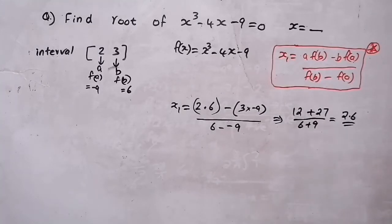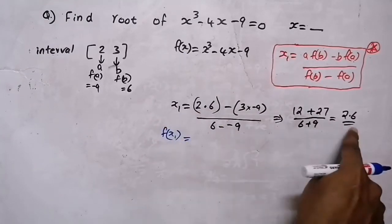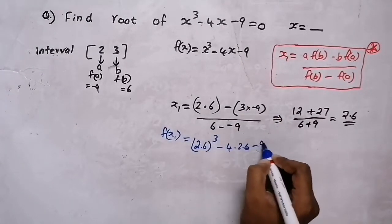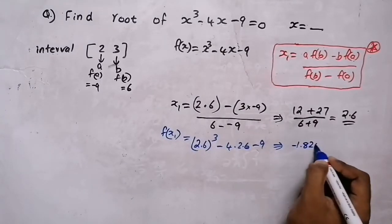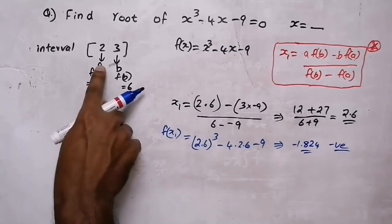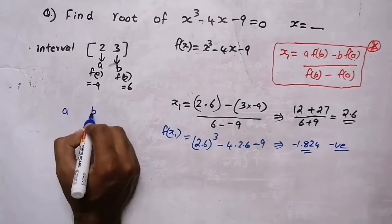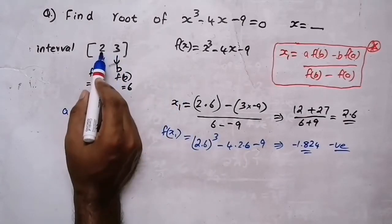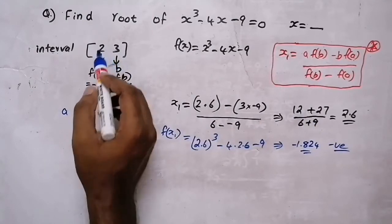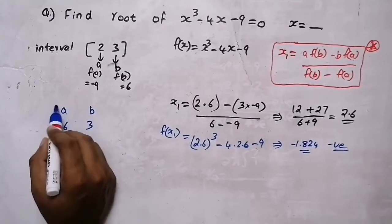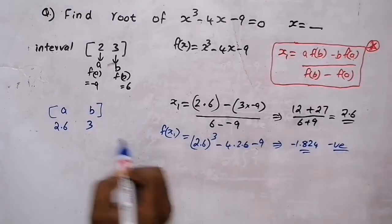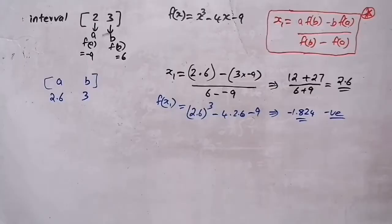We got x1 = 2.6. Now we need to find f(x1). We replace x with 2.6: 2.6³ − 4(2.6) − 9 = −1.824, which is a negative value. Because f(x1) is negative, we replace interval a with 2.6. So the new interval is a = 2.6 and b = 3.